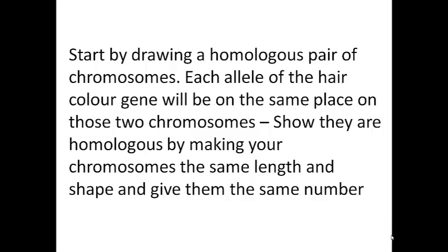Start by drawing a homologous pair of chromosomes. Remember, these are chromosomes that have the same shape and size and contain the same genes. So each allele of the hair colour gene will be on the same place of those two chromosomes. Show these chromosomes are homologous by making them the same length and shape, and give them the same number — any number will do, just the same number to show that they're a homologous pair.